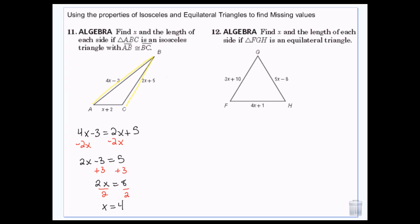Now that was the first part — it told me to find x — but it also said to find the length of each side. So now I need to plug x in. So 4 times 4 minus 3 is 16 minus 3 — this side is 13. And 2 times 4 plus 5 gives the same 13. And the third side is 4 plus 2, which is 6. So my sides are 13, 13, and 6.